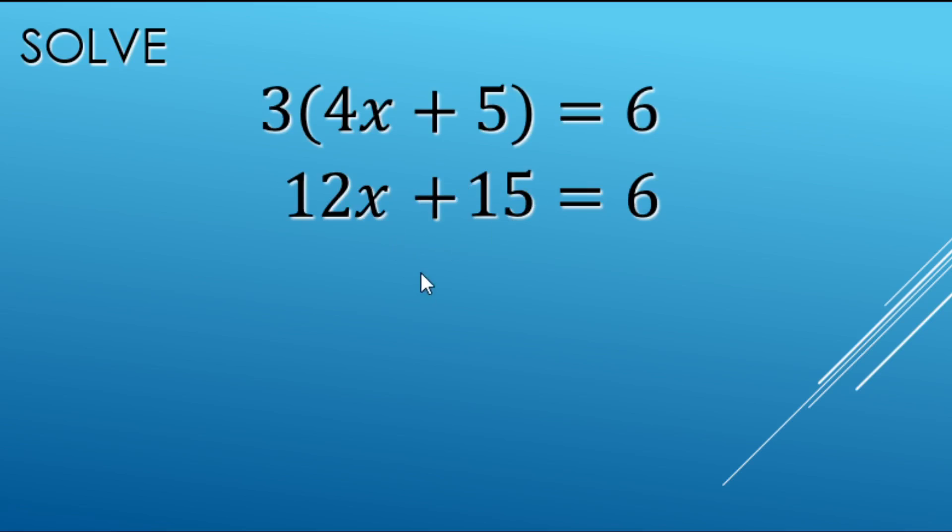So here we want to go from 12x plus 15 to just x equals and then the value there. So we're going to be undoing some operations here.